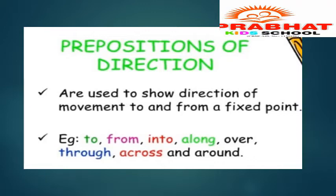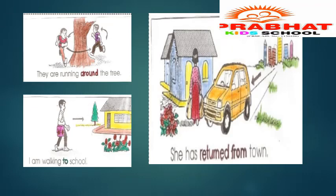'Between' is used to show the position of something in relation to two objects. 'Among' is used within a group of people. Two more examples: 'beside' versus 'besides.' 'Beside me, my father was sitting in the bus' — meaning next to me. 'Besides this document, I want the original document' — meaning in addition to. These are different uses and students should note the distinction.